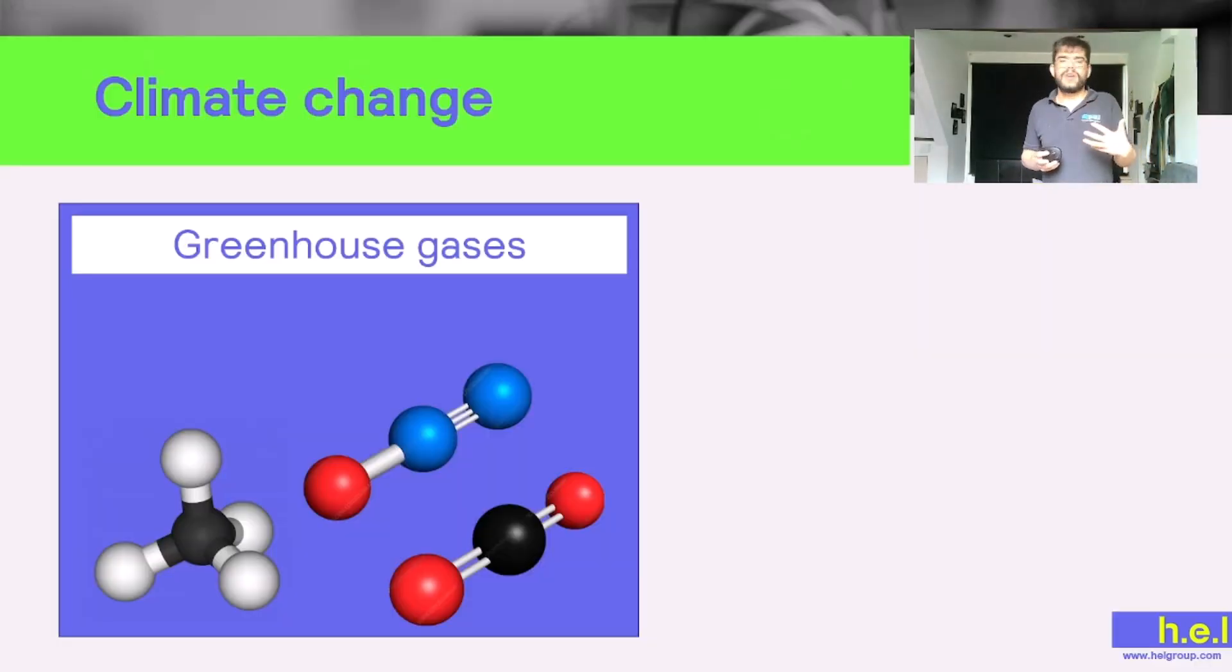Let's see how bioreactors can help with these issues. The first one is climate change. We know that climate change is due to global warming, and global warming is the result of accumulation of certain gases in the atmosphere. Some of these gases can be CO2, methane, or nitrous oxide.